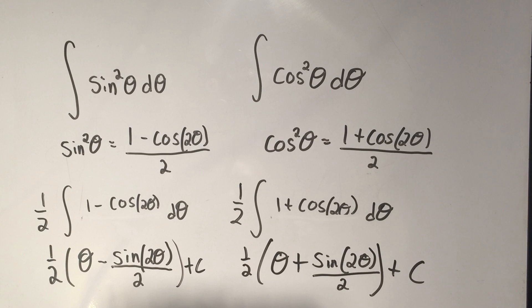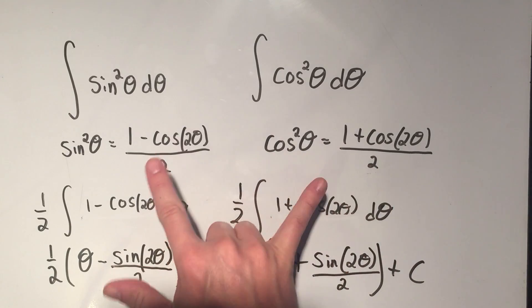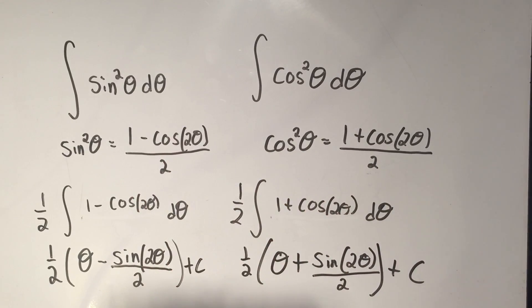So pretty much any time you see sine squared or cosine squared, you're just going to apply these two identities. And if you like, you can actually memorize the answers to them. I wouldn't recommend to do that. That's just more memorization. So I would recommend just memorizing these two identities.